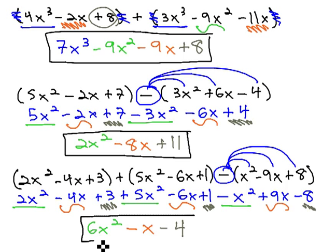And we have our final solution from adding and subtracting the polynomials of 6x² minus x minus 4.